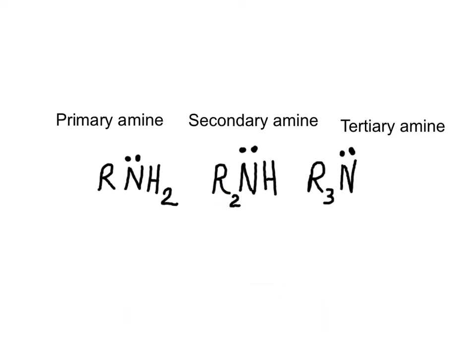It is of great importance to recognize the different types of amines. A primary amine has nitrogen attached to only one carbon. In a secondary amine, the nitrogen is bonded to two carbons. A tertiary amine has no hydrogens attached to the nitrogen but is bonded to three carbons.